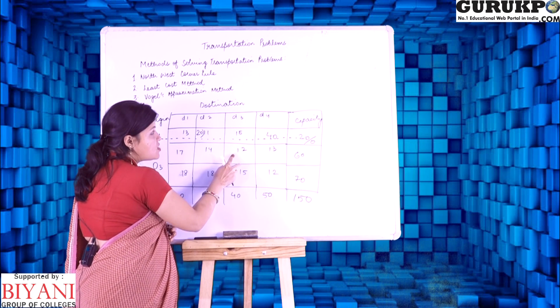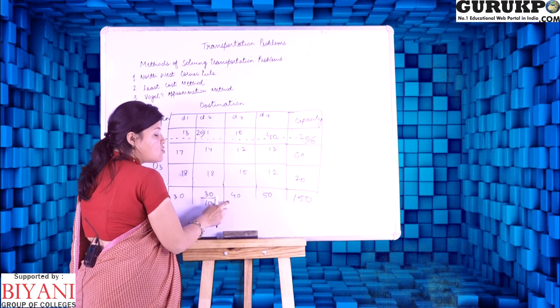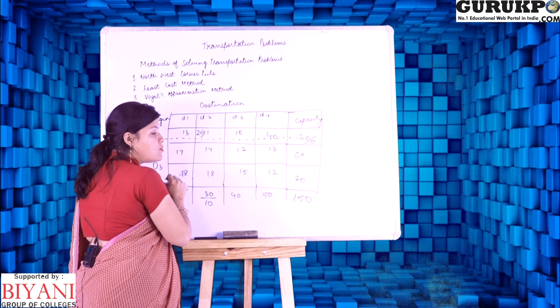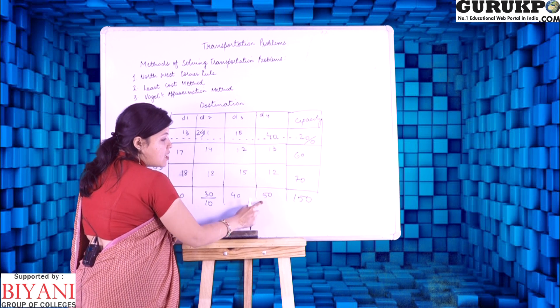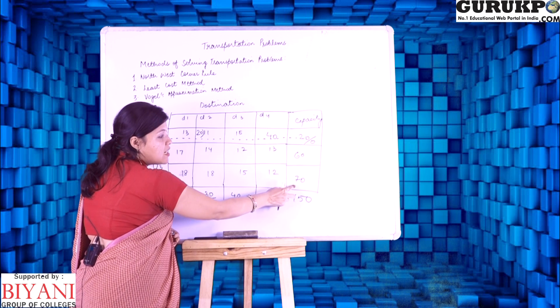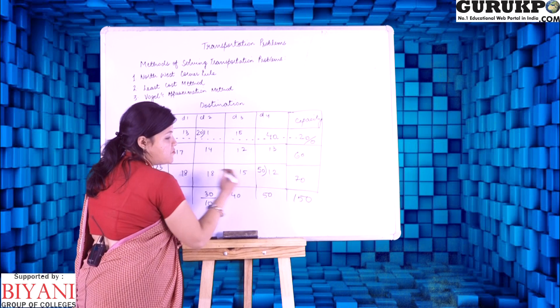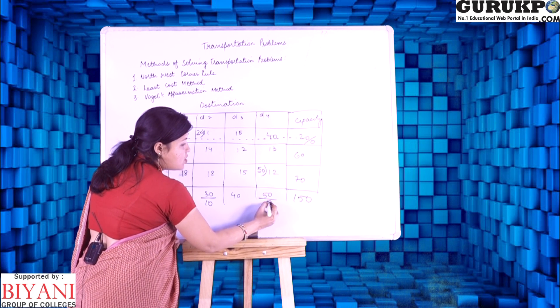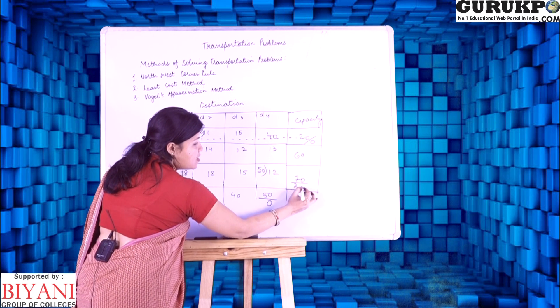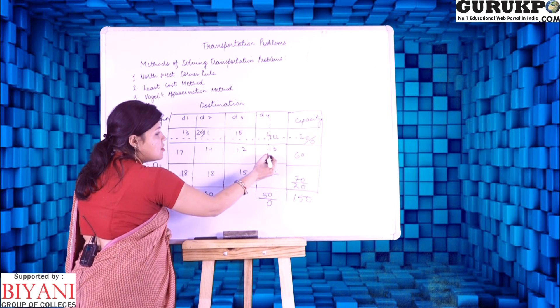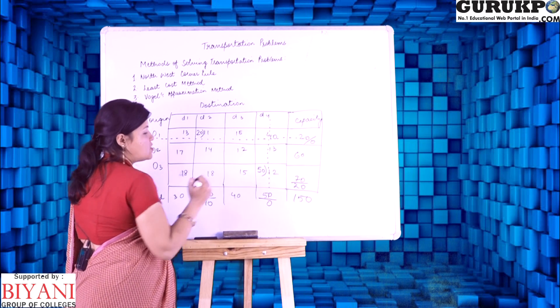So, here, as the requirement is 40 and supply is 60, so we can give here only 40 units. And according to this, here the requirement is 50 and it can supply 70 units. So, we can allocate here 50. So, it comes to 0 and it remaining is 20 and accordingly the demand is satisfied.